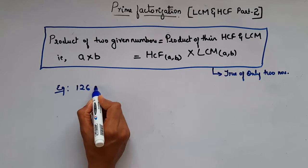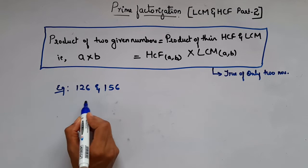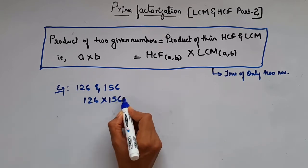Let's say two numbers 126 and 156. So product of these numbers, 126 times 156, will give you 19,656.